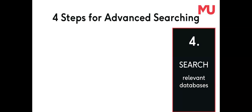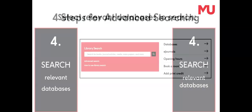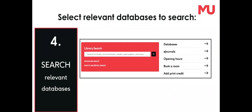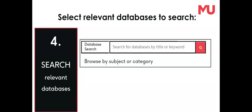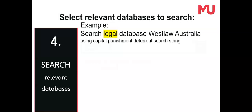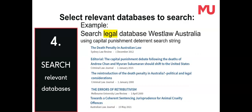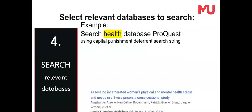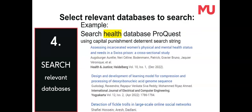Step 4 in advanced searching is to search relevant databases. For comprehensive results, search more than one database on a topic. On the Murdoch Libraries Databases page, select from the Browse by Subject or Category menu and a list of relevant databases will be given. Different databases hold different resources from different publishers with different journals and different subject specialisations, hence the need to search more than one relevant database.